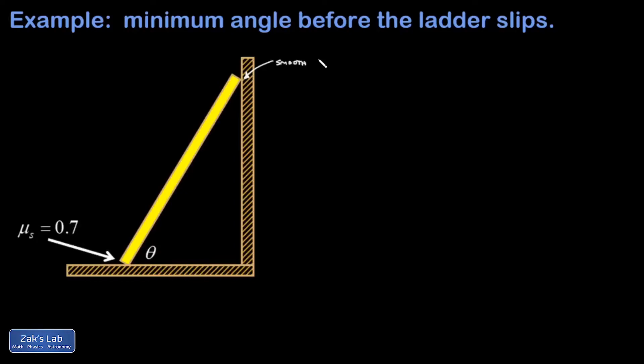In this problem we're trying to find the minimum angle right before this ladder slips. We have friction against the floor but we have a smooth wall here, so we don't have to worry about having multiple friction forces in the problem.